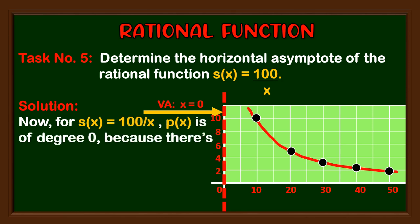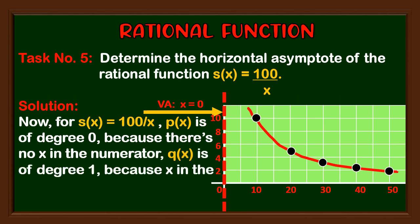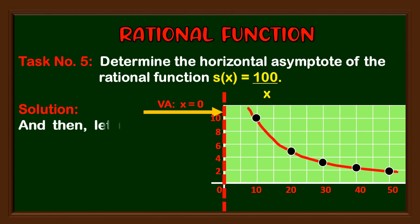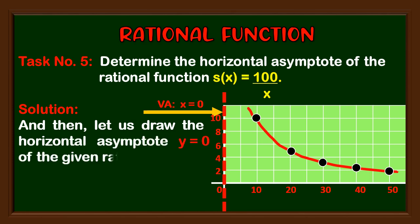For s(x) = 100 / x: p(x) is of degree zero because there is no x in the numerator, and q(x) is of degree one because x in the denominator is first degree. Since the degree of p(x) is less than the degree of q(x), then y = 0 is the horizontal asymptote. Let us now draw the horizontal asymptote y = 0 of the given rational function s(x) = 100 / x.